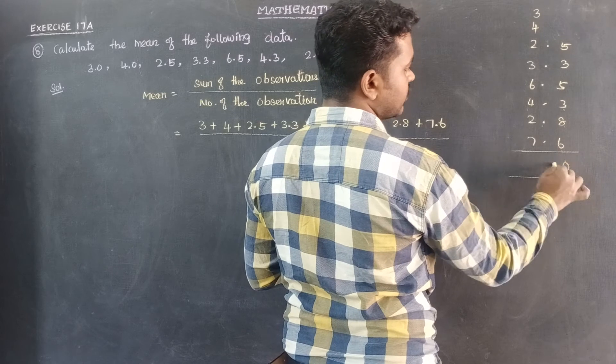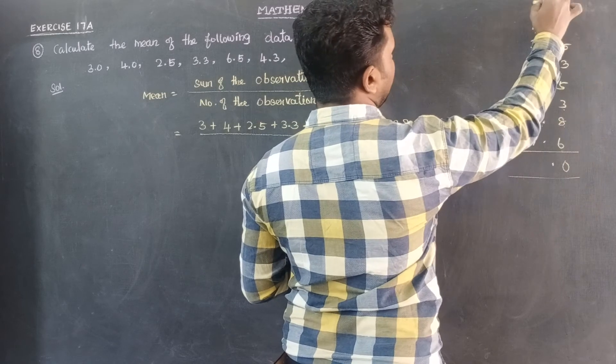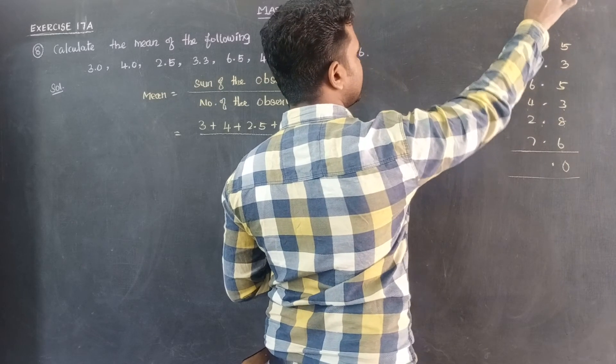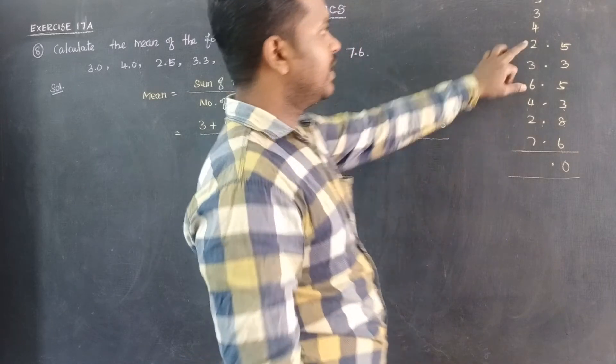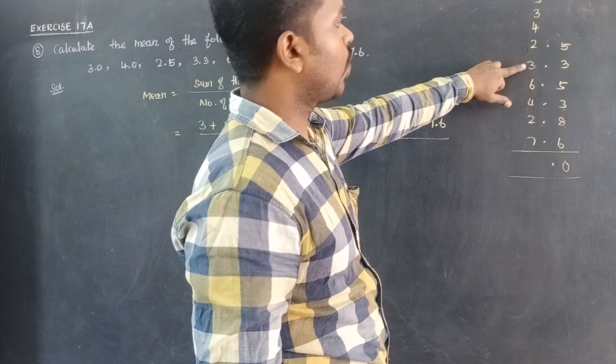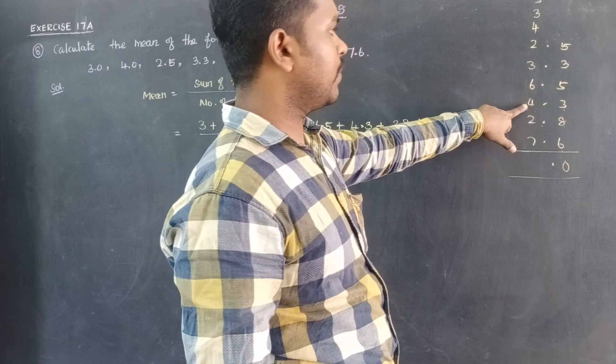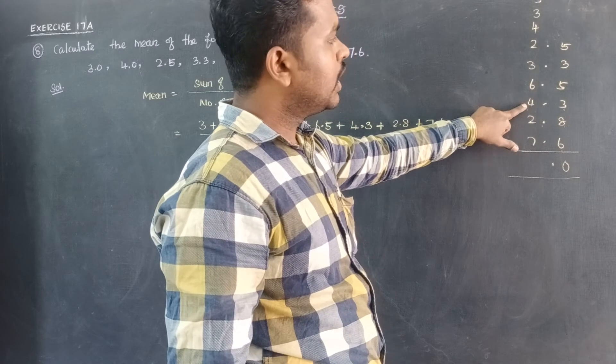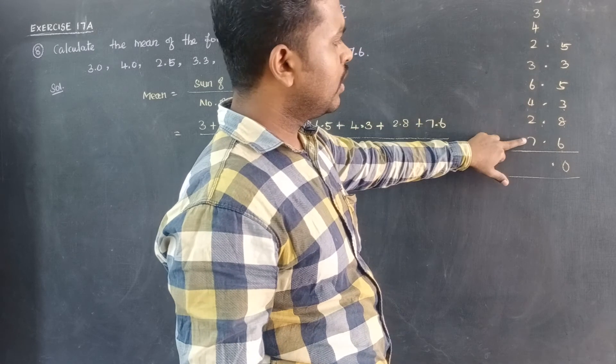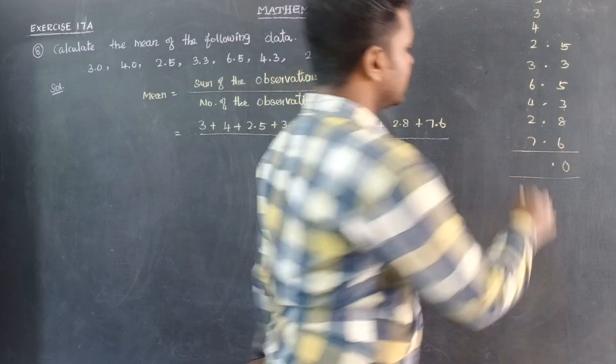24 plus 6, 13. Remaining 3 plus 3, 16. 16 plus 4, 10. 10 plus 2, 12. 12 plus 3, 15. 15 plus 6, 21. 21 plus 4, 25. 25 plus 2, 27. 27 plus 7, 34.